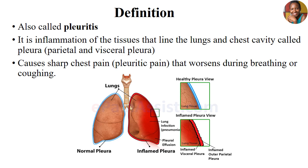The occurrence of pleurisy or pleuritis causes sharp chest pains — what we call pleuritic pain — that usually worsen during breathing or coughing. Pleuritis is the inflammation of the lining of the lungs and chest walls, and this lining of the lungs is what we call the pleura.